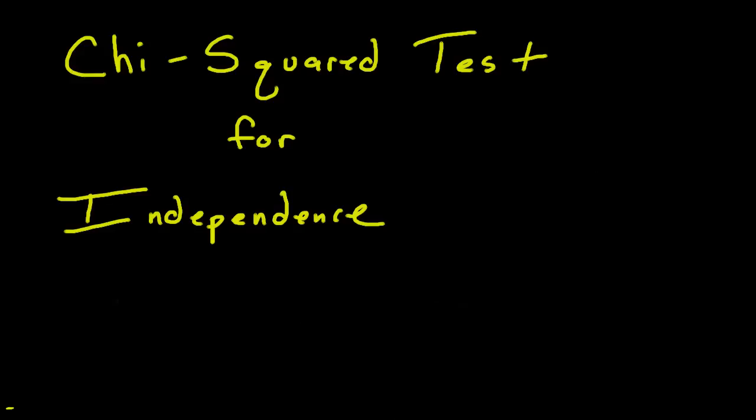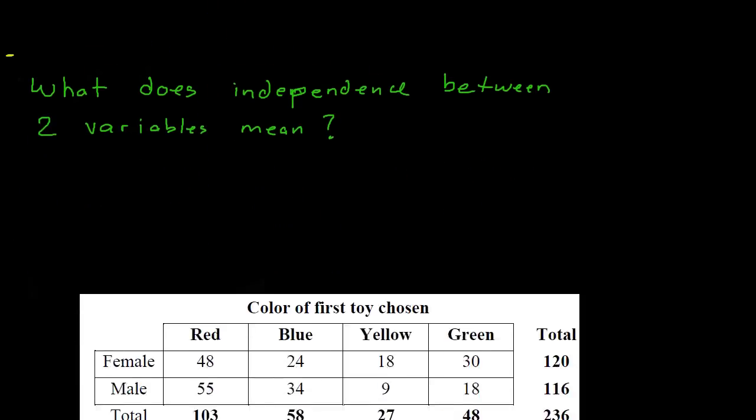This video is about a chi-square test for independence. Earlier we learned about a chi-square test for goodness of fit, which dealt with one categorical variable and how well our data fit with that variable. Now we're going to look at identifying independence between two variables.